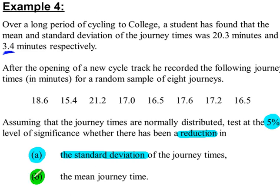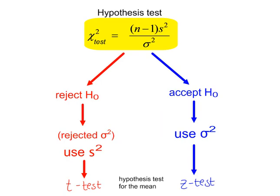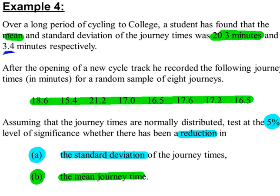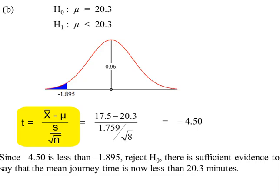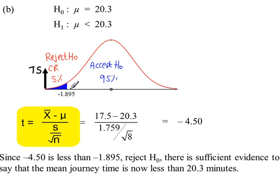Part B: we're going to test the mean journey time. The mean is 20.3 minutes, using the same sample. To test the population mean, if we've rejected H0 we use a t-test; otherwise we use a z-test, the normal distribution test. Testing to see whether there has been a reduction in the mean journey time — a one-tail test. The test statistic is minus 4.5, which is less than minus 1.895, so we reject H0.